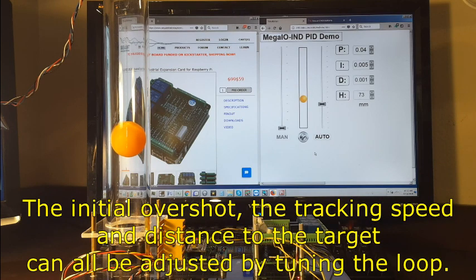The initial overshoot, the tracking speed, and distance to the target can all be adjusted by tuning the loop.